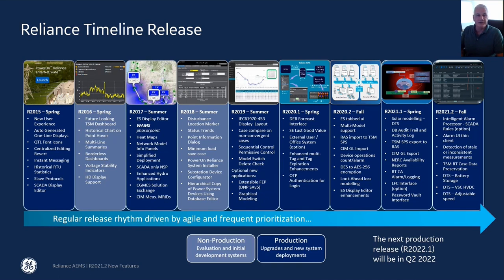We denote these releases by .1 for spring and .2 for fall. Our last release is Reliance 2021.2, which came out in October last year — that's the one I'm going to go through in these next few minutes. Our next release will be in the spring of 2022, and we call that Reliance 2022.1.